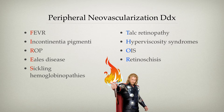Also IRVAN — idiopathic retinal vasculitis, aneurysms, and neuroretinitis. In some of these cases, such as retinitis pigmentosa, it may be more likely that the patient would have a vasoproliferative tumor rather than simply neovascularization elsewhere, peripheral.